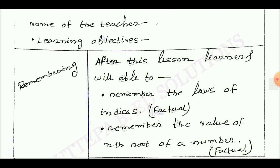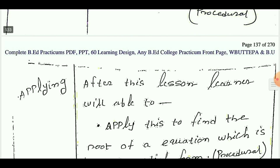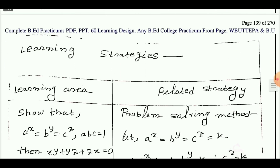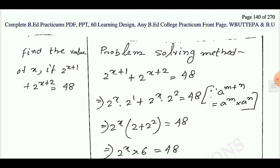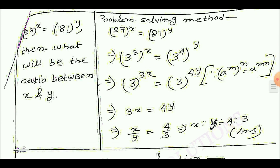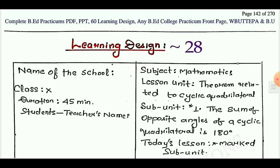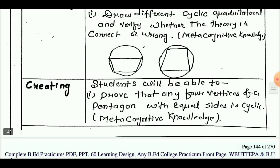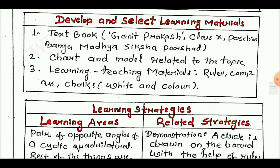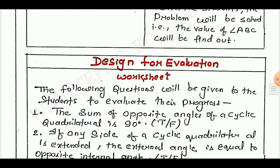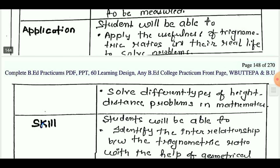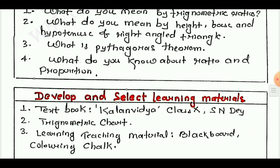Learning design number 27. Learning objectives are remembering, understanding, applying, analyzing, evaluating, and creating. Next: analyze learner and context, develop and select learning materials.